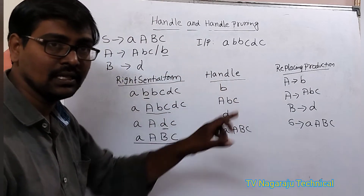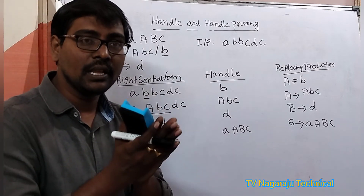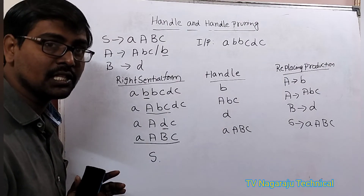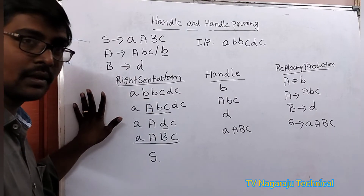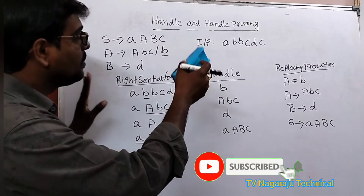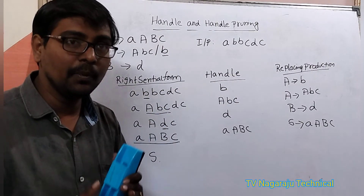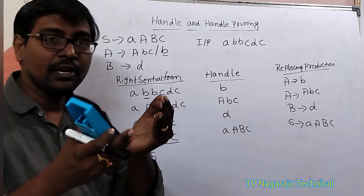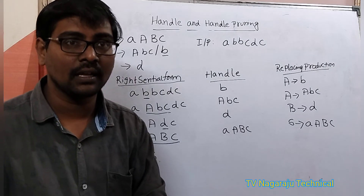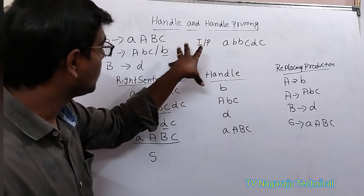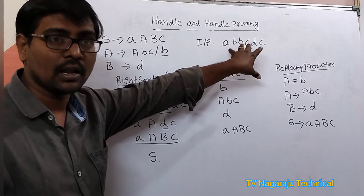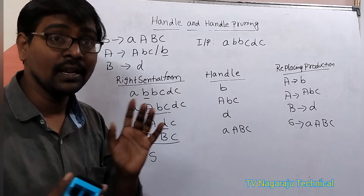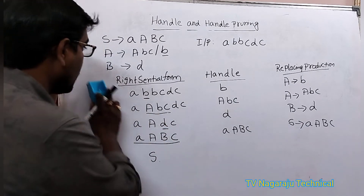Whenever a handle appears, the handle is replaced with the left-hand side variable. Now, what is meant by handle pruning? Handle pruning means deriving a string in the rightmost derivation in reverse order. Suppose this is the grammar and this is the sentence — we are deriving the sentence using the rightmost derivation in reverse order. That is handle pruning.